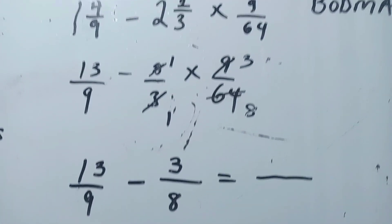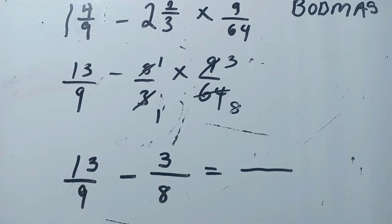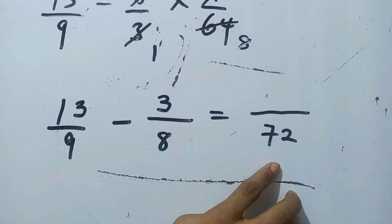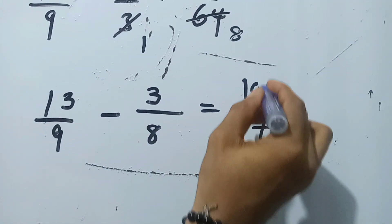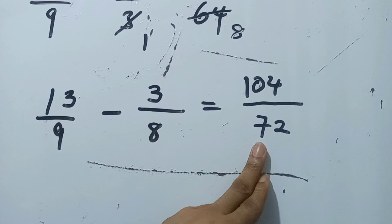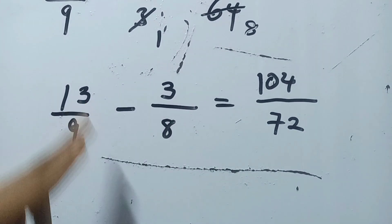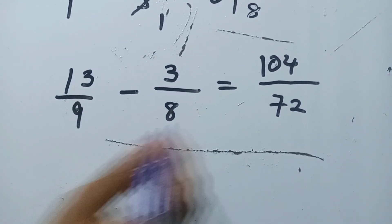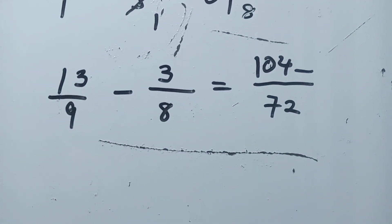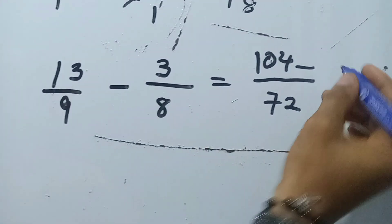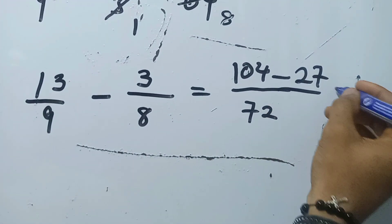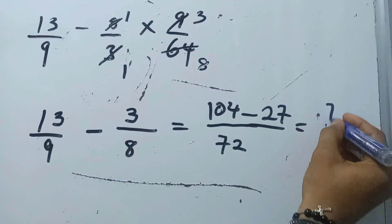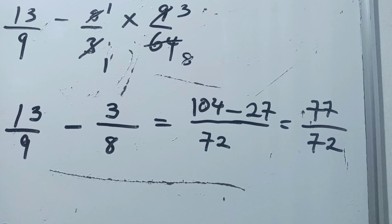I find the LCM of 9 and 8, which is 72. Nine goes into 72 eight times, and 8 goes into 72 nine times. So eight times 13 is 104, and nine times 3 is 27. We then subtract: 104 minus 27 is 77 over 72. So the denominator equals 77 over 72.